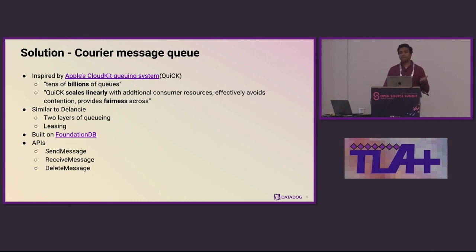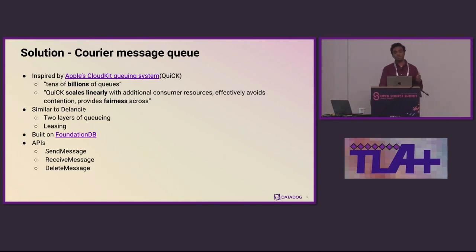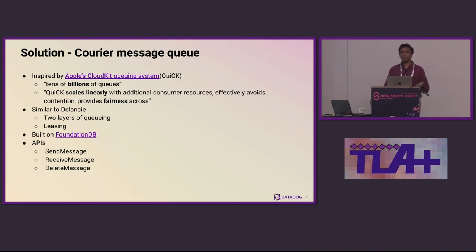One system that caught our attention was a system at Apple called Quick, which had many of the properties I was looking for — such as the ability to have many queues, linear scalability, and fairness. Moreover, Quick was almost identical to Delancey: both had two layers of queuing, and the way message leases and queue leases worked were also identical. But Quick had one key difference — it was backed by FoundationDB and was able to offer stronger guarantees of durability and horizontal scalability.